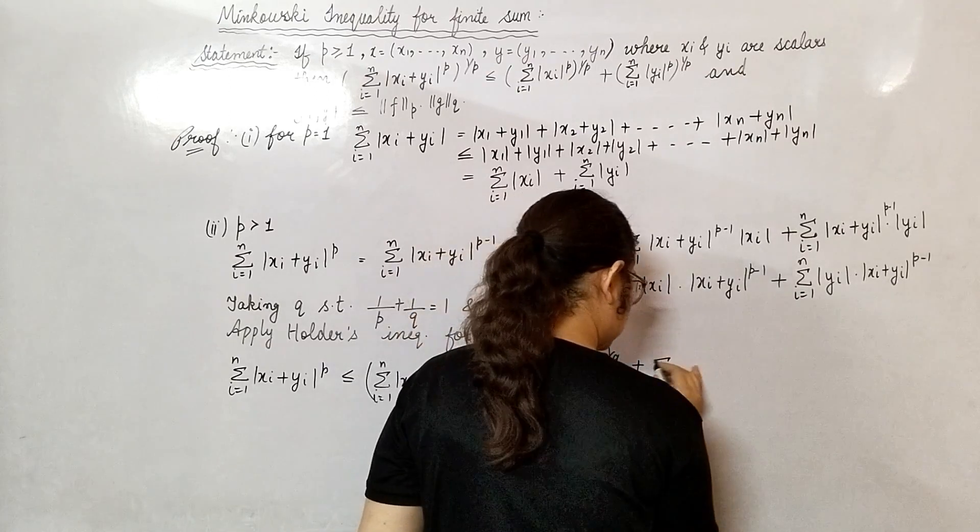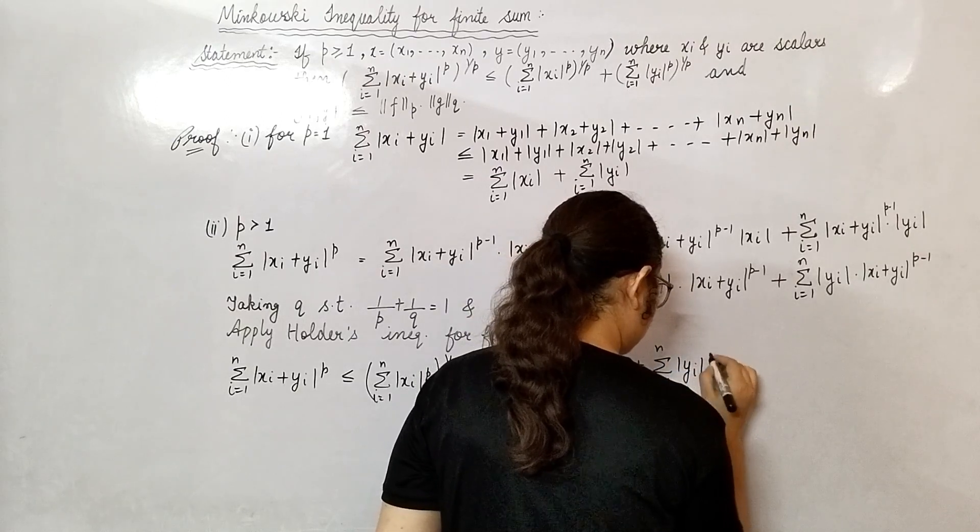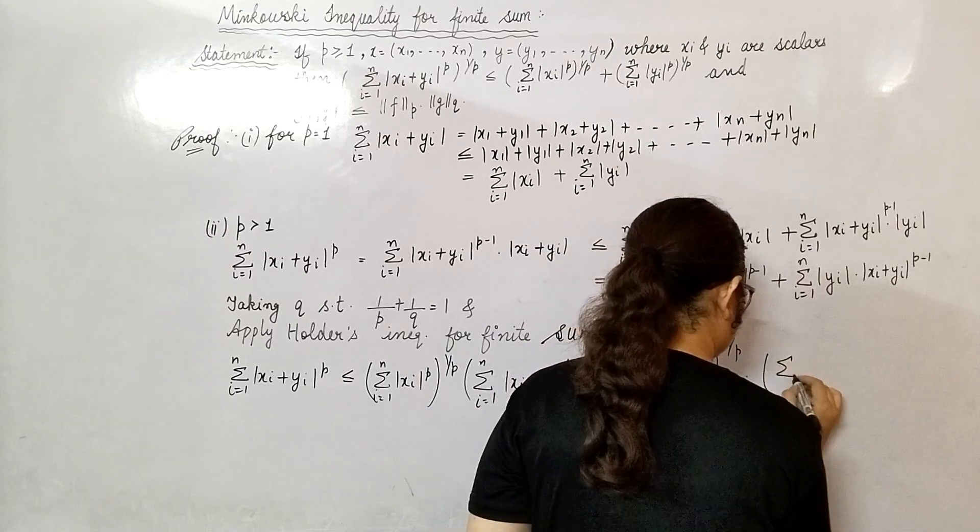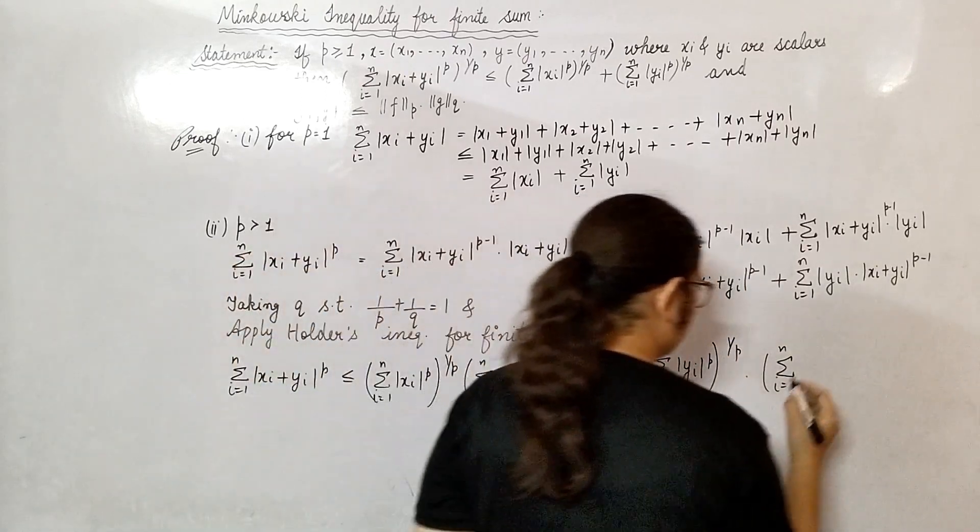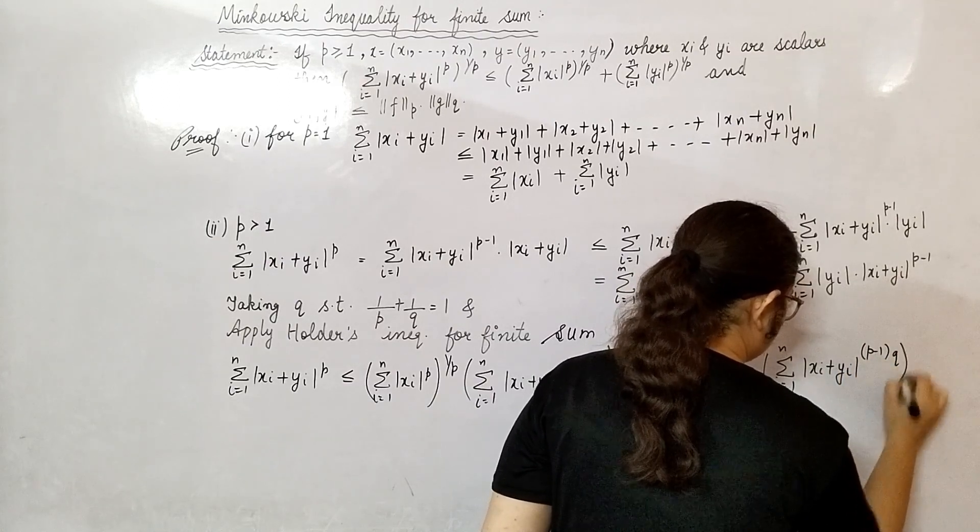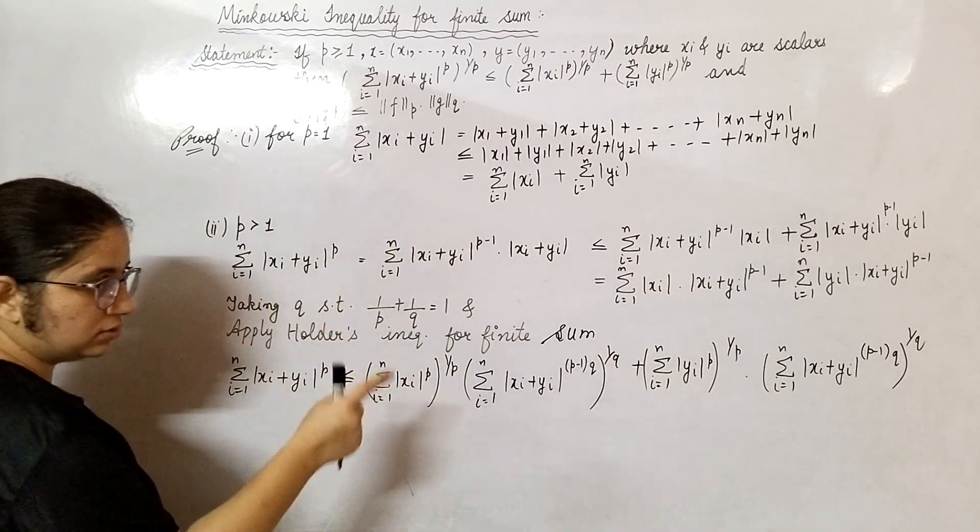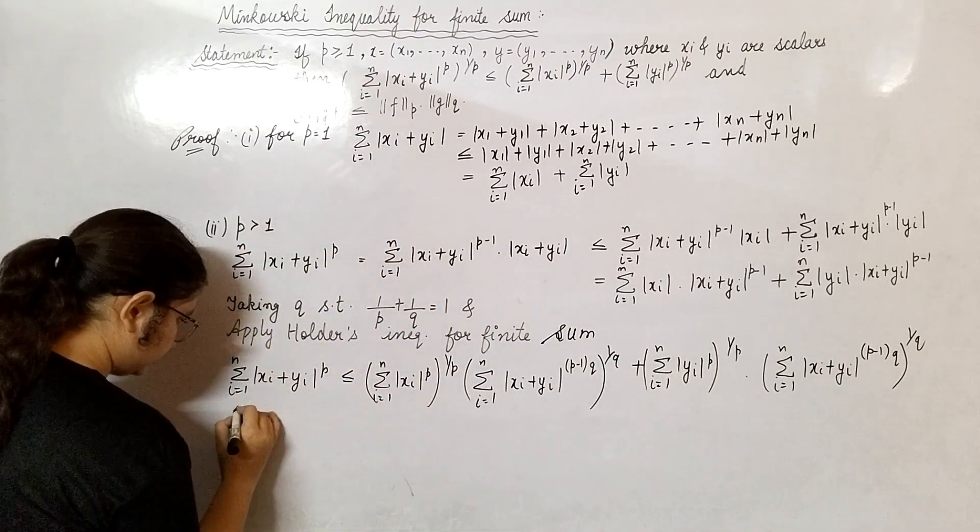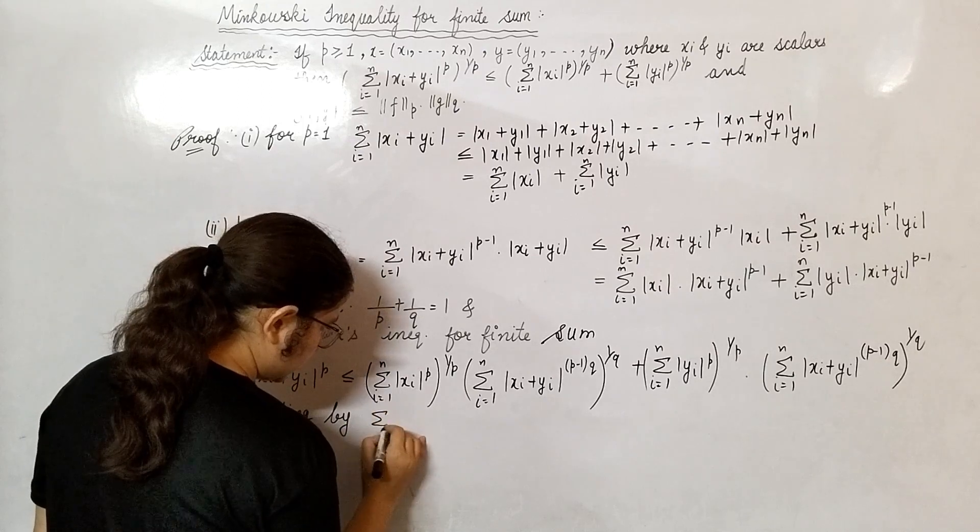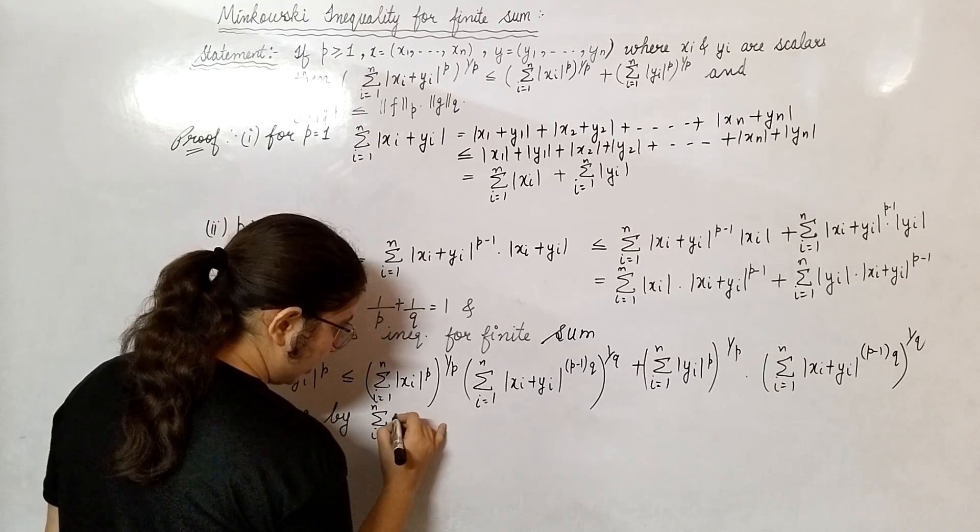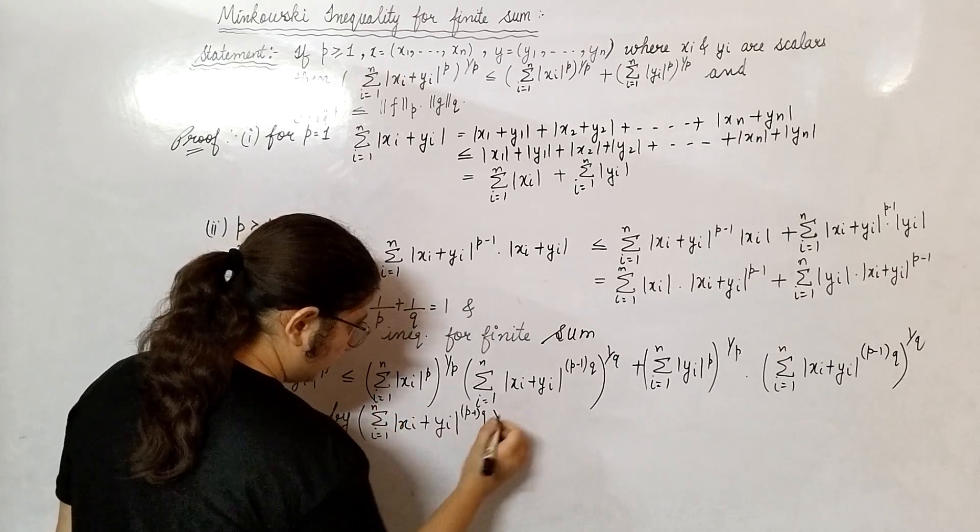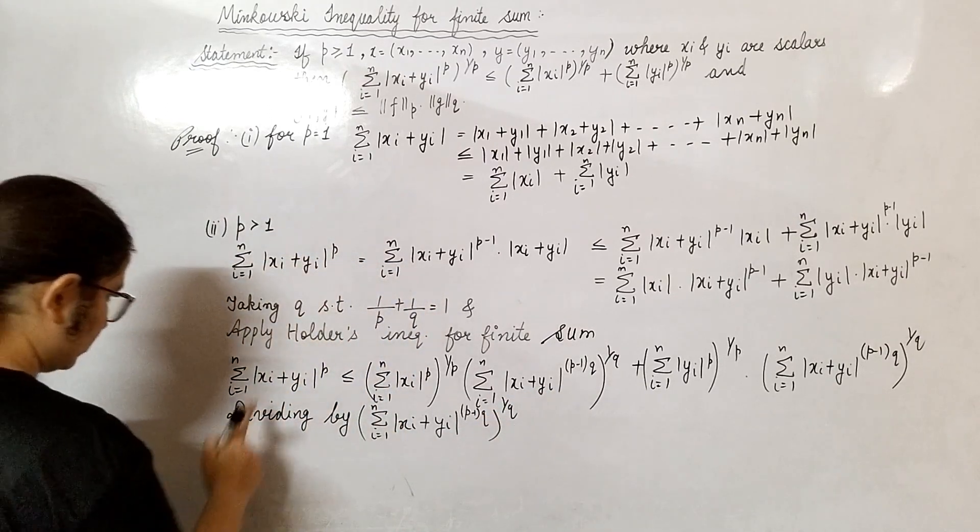Plus summation i from 1 to n, |y_i|^p to the power 1/p, into summation i from 1 to n, |x_i + y_i|^((p-1)·q) whole power 1/q. Dividing, what did we do?